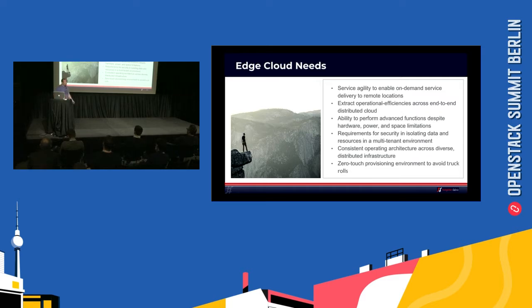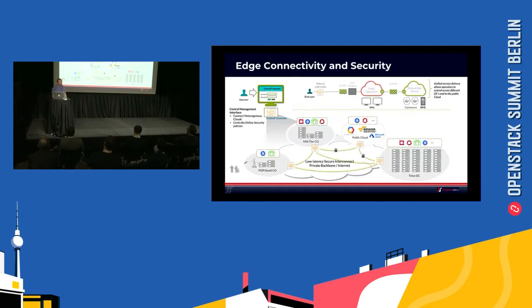Doing a truck roll for a small device sitting underneath a pile of sweaters is incredibly expensive. So you need to have a zero-touch architecture with the ability to do self-recovery and other things. Fortunately, OpenStack and some of the networking SDN products can be shrunk to fit into that space.